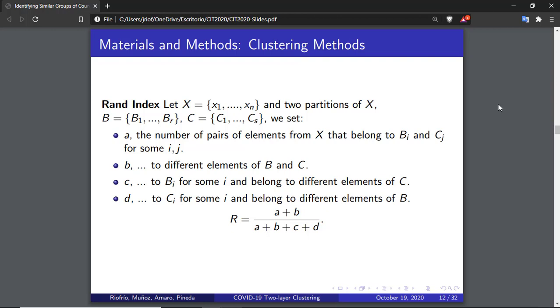RAND index is a metric to measure the similarity between clustering methods. The RAND index gives a value between 0 and 1, where 1 means the two clustering outcomes match identically, and 0 means that the outcomes are completely different.